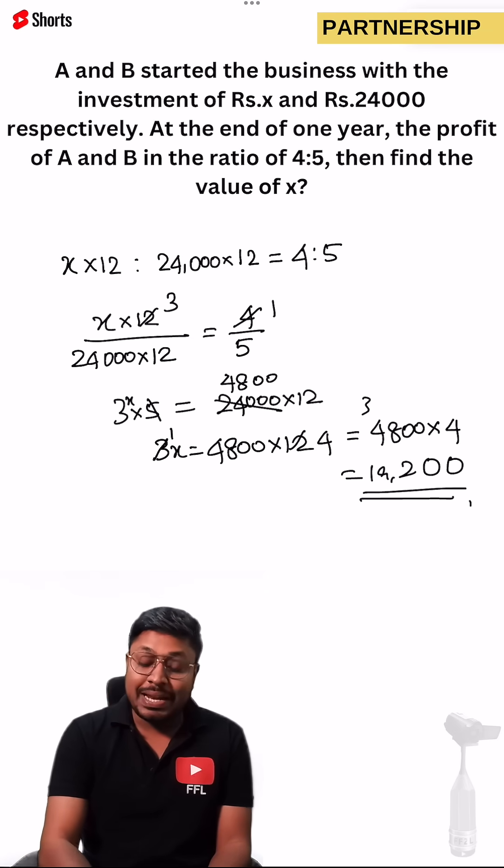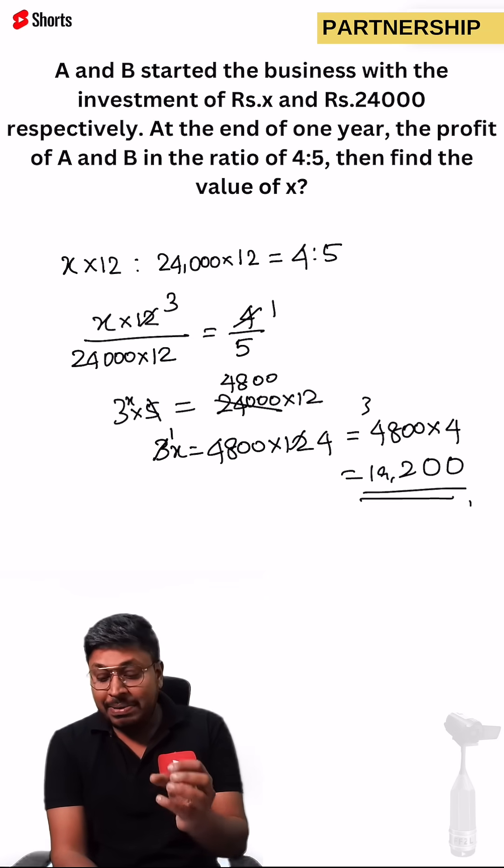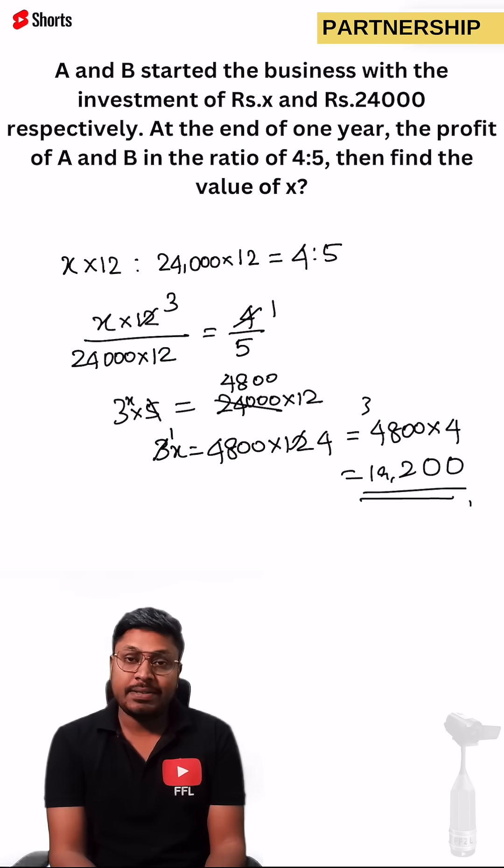So 19,200. So 19,200 will be the investment of the person A, right. So this is the value what we need to find here in the question.